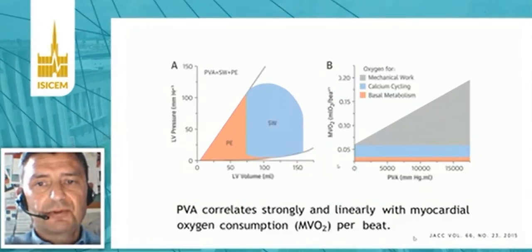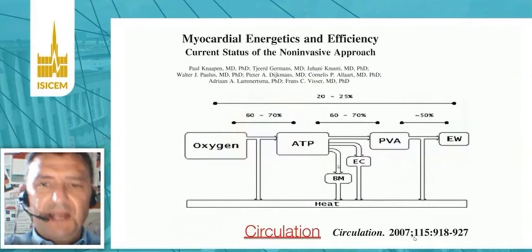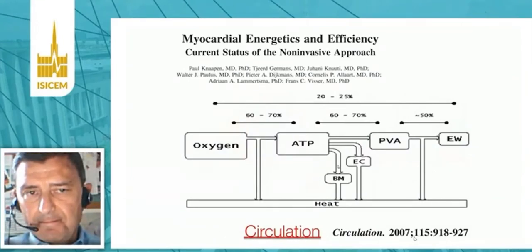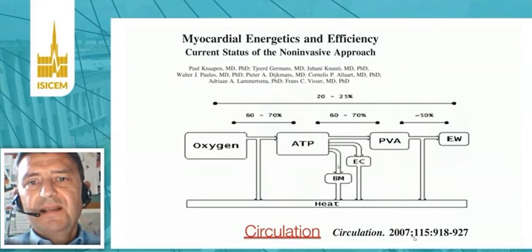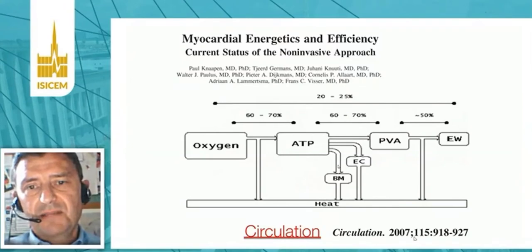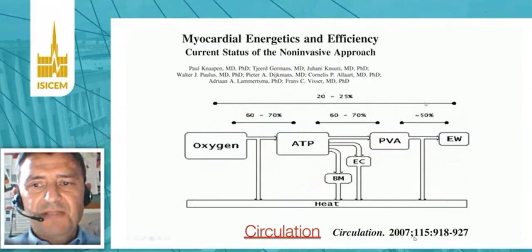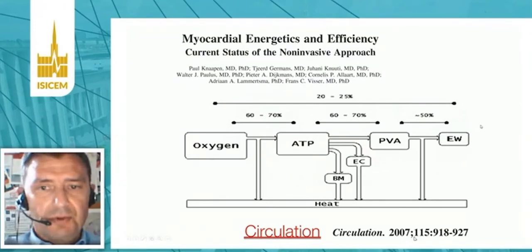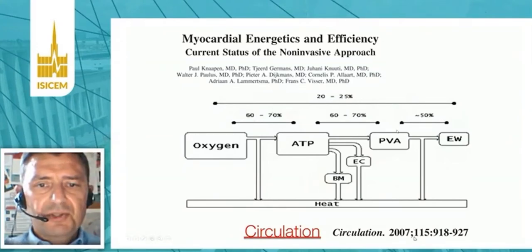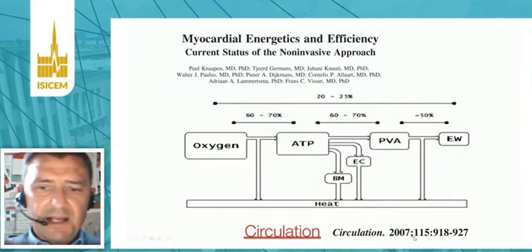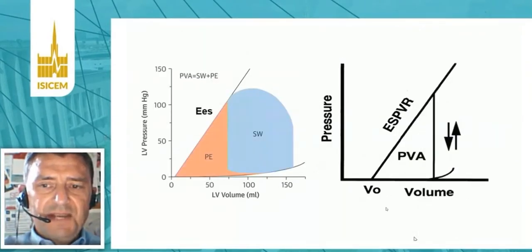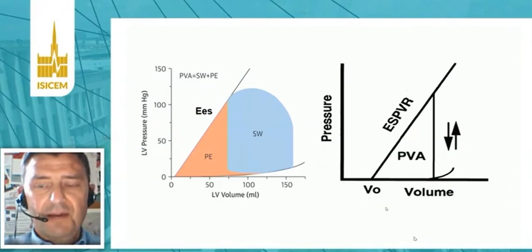It is also very interesting to underline that under normal circumstances, the efficiency of the cardiovascular system in terms of energetics and oxygen utilization is quite low — only 20 to 25 percent of oxygen is used to produce external work. Most oxygen is used for calcium cycling, basal metabolism, and ultimately ends up as heat production. When we increase the pressure-volume area, we significantly affect myocardial oxygen consumption.